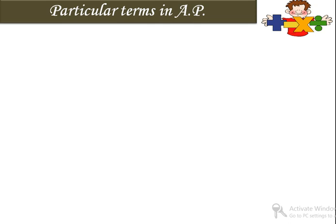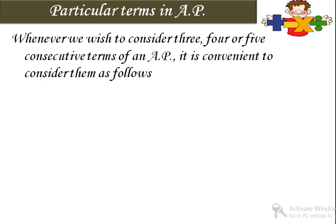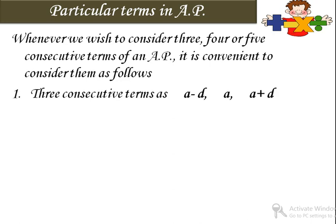Whenever we wish to consider three, four, or five consecutive terms of an AP, it is convenient to suppose them as follows. अगर आपको three consecutive terms suppose करना है तो आप a minus d, a, और a plus d लें — suppose the three consecutive terms are a minus d, a, and a plus d, where a is the first term and d is the common difference.